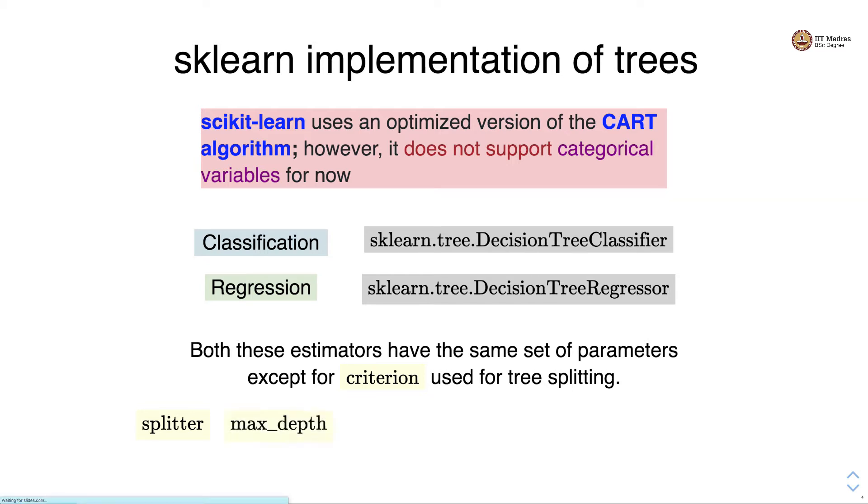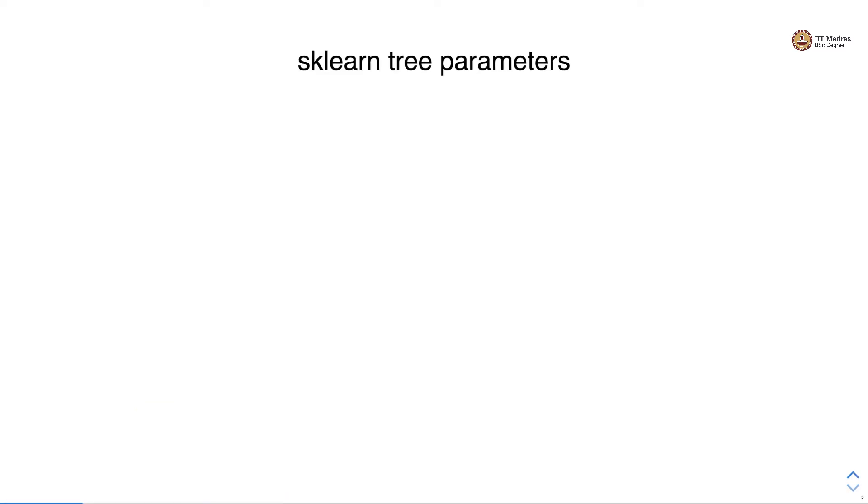There are parameters like splitter, max_depth, min_samples_split and min_samples_leaf. Let's look at what these parameters actually mean. The splitter specifies strategy for splitting at each node. It has two values: best and random. Best is the default value used for splitter strategy.